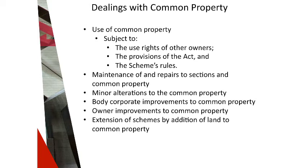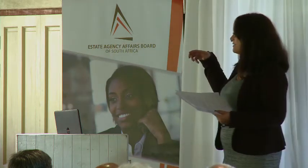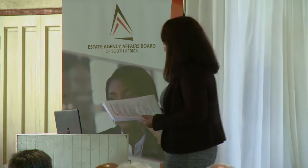Another function of the trustees is to insure the buildings. The body corporate insurance policy covers the common property of the scheme and also includes geyser cover. Geyser repairs and maintenance are for the account of the owner who uses that geyser, even if the geyser is placed on common property, but geysers must be insured under the body corporate insurance policy. A useful way to think about what forms part of the body corporate insurance: if you take the building, turn it upside down and shake it, anything that doesn't fall out is covered by body corporate insurance; anything that falls out forms part of your home contents insurance and is your own responsibility.